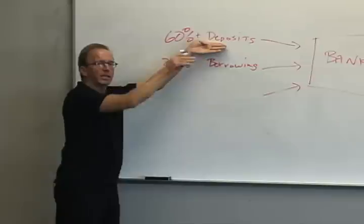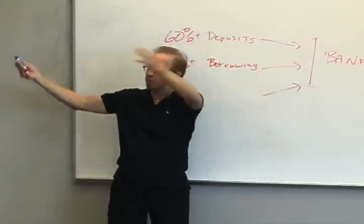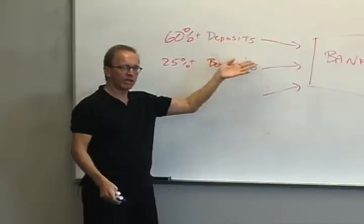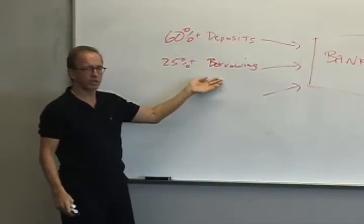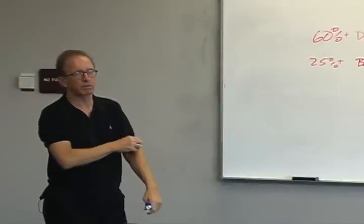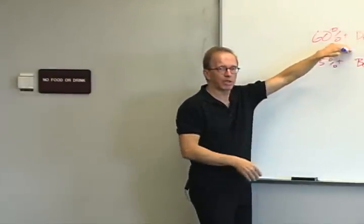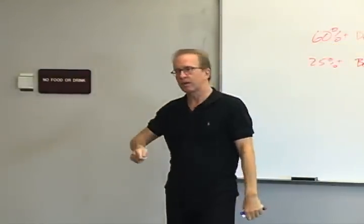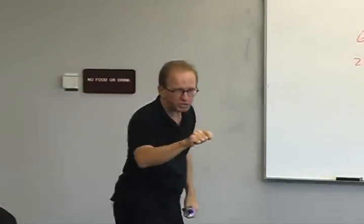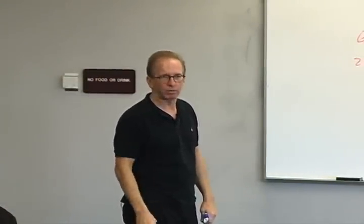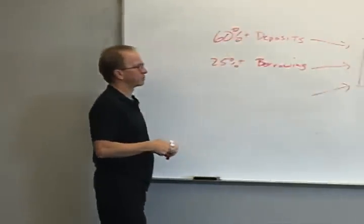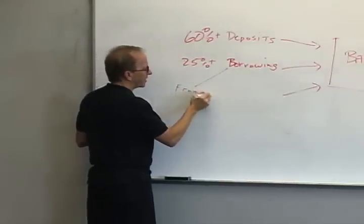All of this deposit money is other people's money - the bank says to other people, give us money. With deposits, you can spend it, we promise you interest, and you have deposit insurance. With borrowing, the bank goes out and basically asks, would you make a loan to me? They sign documents, very often provide collateral, and there is no deposit insurance. Let's talk about some of this borrowing - from other banks.